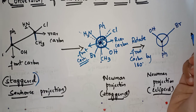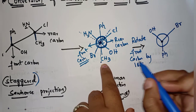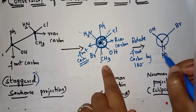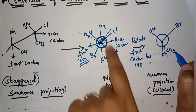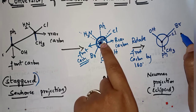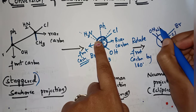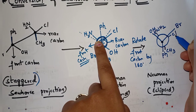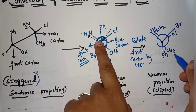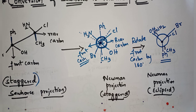Now we write the rear carbon groups. There is no change in the representation of the rear carbon groups, but they are written as small lines because they are present behind the front groups. CH3 is here, Cl is here, and NH2 is here on the rear carbon. The angle between front and rear groups is 0 degrees — NH2 is behind OH, Cl is behind Br, and CH3 is behind phenyl. We have now obtained the Newman projection eclipsed form, completing the conversion from sawhorse to Newman projection.